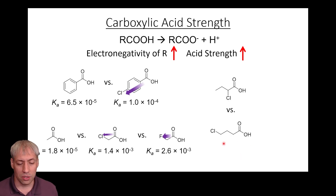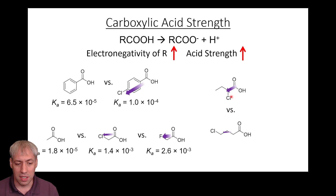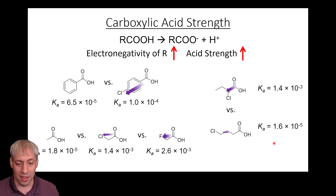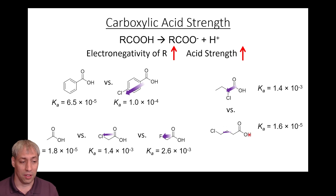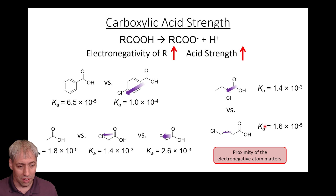It also matters how close the electronegative atom is to the carboxylic group. Two molecules with the same formula but chlorine in different positions — one closer to the COOH group, one at the tail end — will have different acid strengths. The chlorine closer to the carboxylic group pulls harder, weakening that OH bond more. The Ka values are 1.4×10⁻³ versus 1.6×10⁻⁵ — two orders of magnitude difference. So not only the nature of the atom matters, but also its proximity.